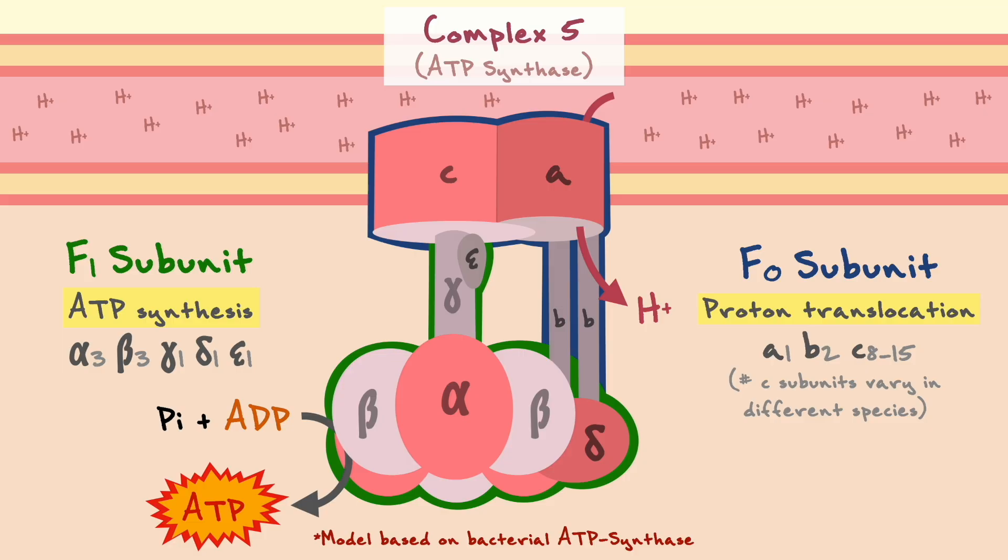The mechanism that couples this proton flow to energy production starts at the A subunit, which can be considered to be the principal conduit for protons to leave. As we will see shortly, this flow causes the C subunit to rotate and consequently the gamma stalk that is attached to it.